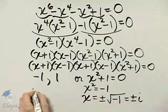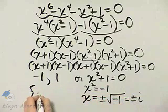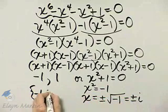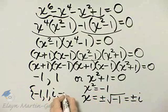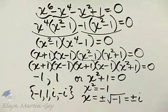So, my goodness, what are our solutions? We have negative 1, we have positive 1, we have positive i, and we have negative i, and there are our four solutions to our equation.